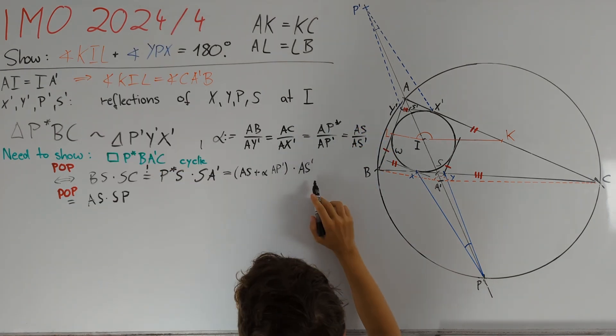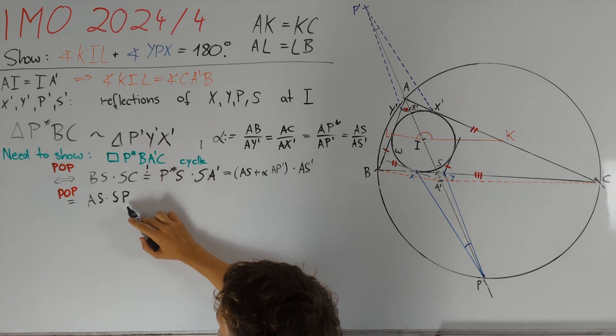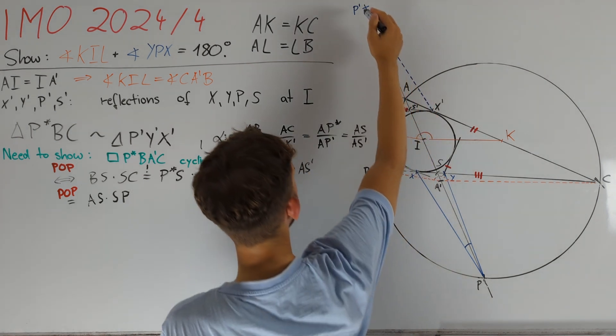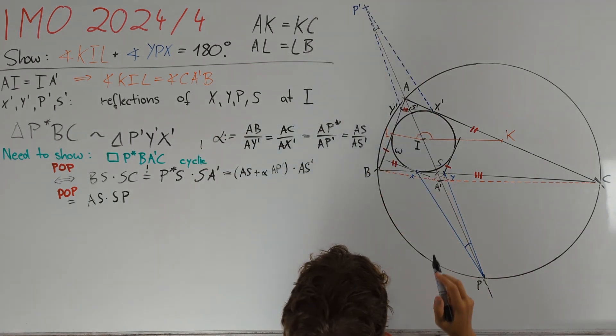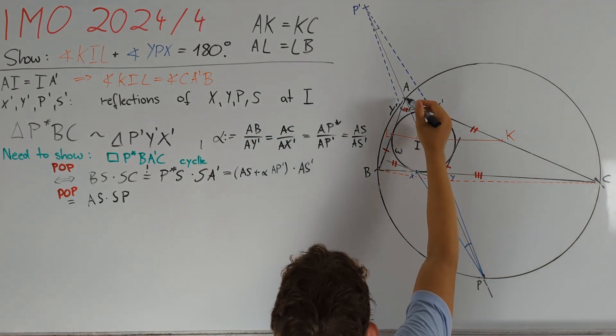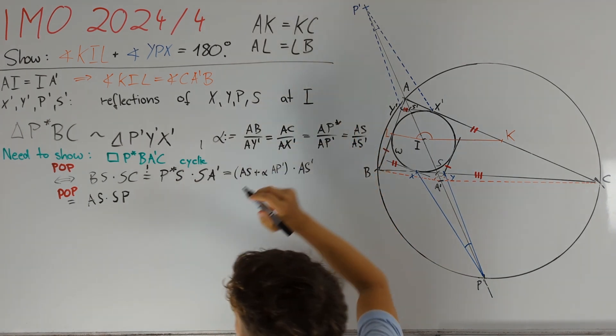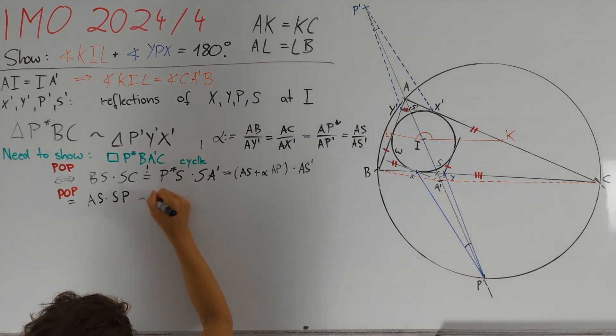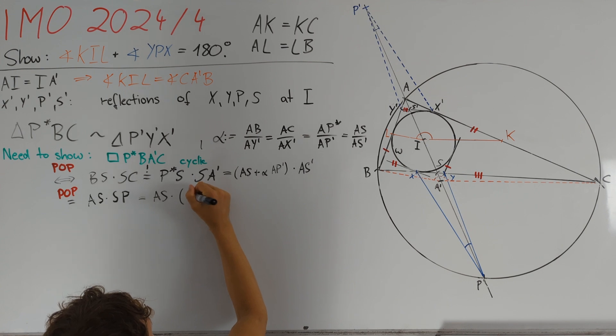Now that we have the right side in this form, we turn our attention to the left side again. And in particular, we will write SP first as S prime P prime, and then split this up into the sum of AS prime plus AP prime. So, we get that this equals AS times AS prime plus AP prime.